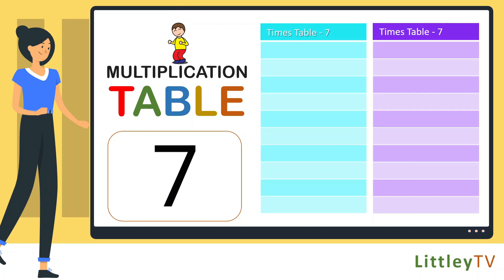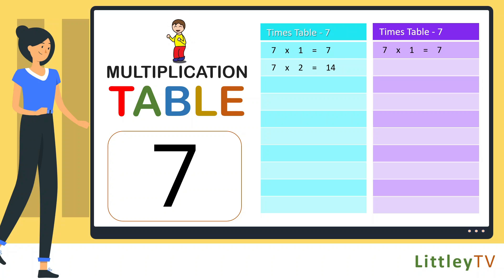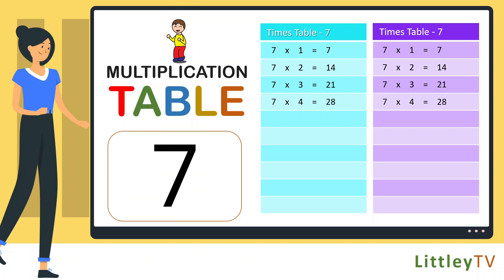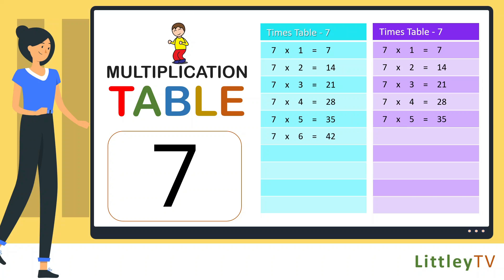Table of 7. 7 ones are 7, 7 twos are 14, 7 threes are 21, 7 fours are 28, 7 fives are 35, 7 sixes are 42, 7 sevens are 49.